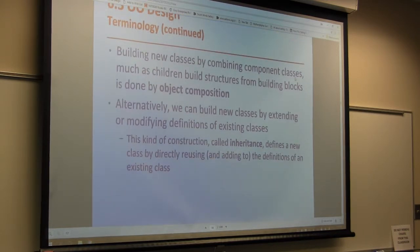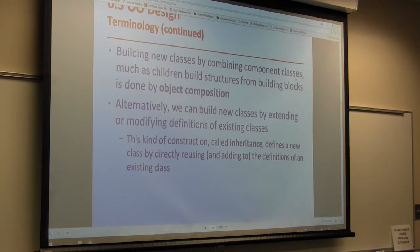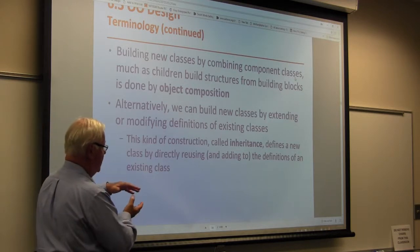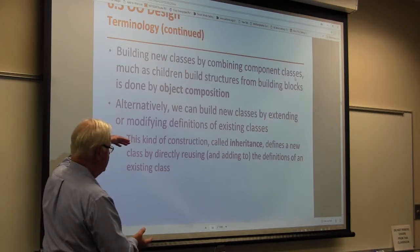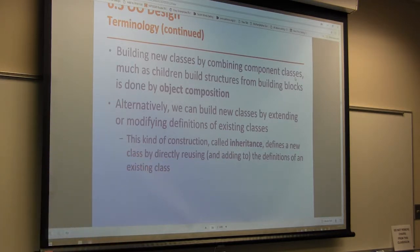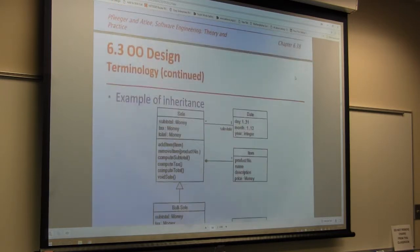If we take classes and combine them to come up with a component class, we call that object composition — we're building on multiple objects or different classes. Alternatively, we can take a class and extend it by modifying the definitions to be more useful using subclasses, and we call that inheritance. Composition and inheritance are the two versions.